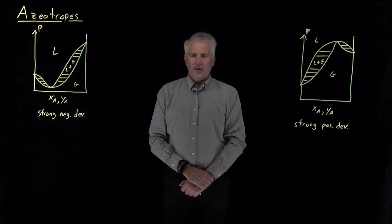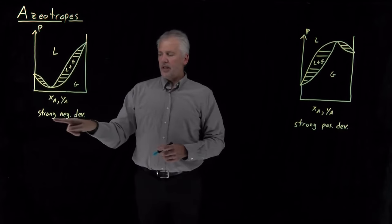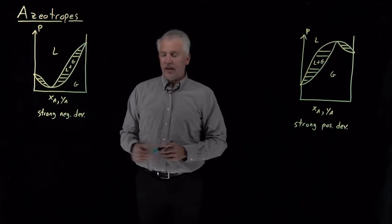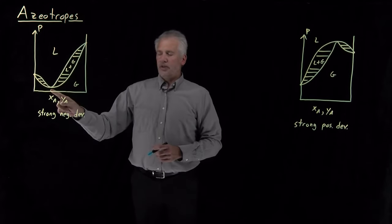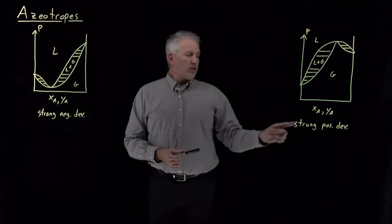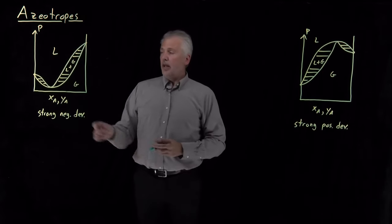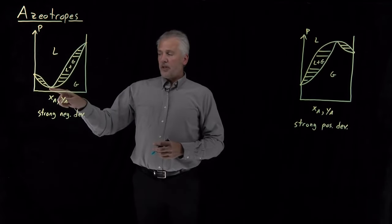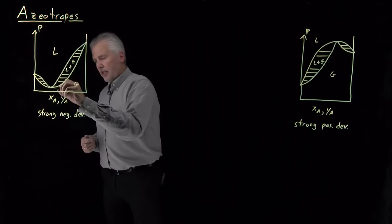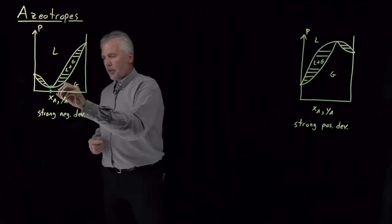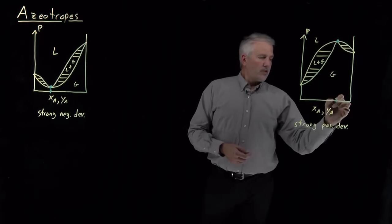Let's look at azeotropes a little more closely. Azeotropes occur in systems that exhibit strong deviations from ideality — either strongly negative deviations from Raoult's law or strongly positive deviations, as seen on a pressure-composition diagram. These phase coexistence regions undergo a minimum or a maximum, and the points at which the minimum and maximum occur correspond to the azeotropic compositions of these mixtures.